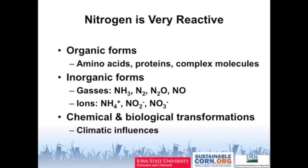Nitrogen can exist in organic forms — amino acids, proteins, and very complex molecules in soils. It can be in various inorganic forms: gases like ammonia, N2, nitrous oxide, and others, as well as ionic forms — ammonium, nitrite, and nitrate. The plant-available forms that plants take up from soils are ammonium and nitrate. Nitrogen is involved in a very broad base of chemical and biological transformations, and climate has a very large influence on both. So climate change will have impacts on these transformations.